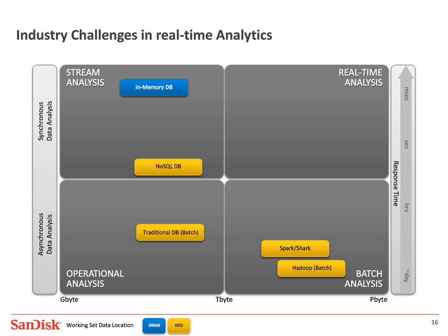Walking through the boxes clockwise: stream analysis in the upper left is used by many web companies to analyze clicks, response time on pages, user patterns, or in the financial community to analyze ticker data and develop stock strategies. Operational analysis is more the traditional ERP systems — running SAP or JD Edwards with a nightly batch job or daily report on gigabytes of data. And then batch analysis, where you might be analyzing multi-terabytes or even petabytes of data — that's where new tools like Hadoop come into play.